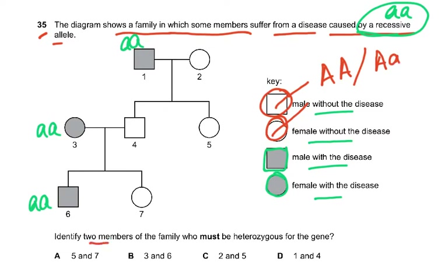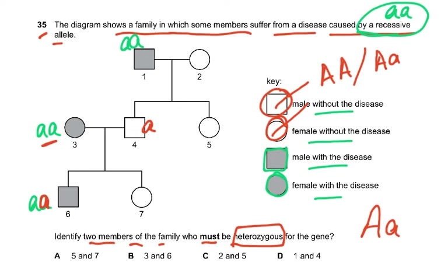The question asks you to identify two members who must be heterozygous (Aa). Persons 3 and 4 are parents of person 6, who has the disease (aa). So one small 'a' must come from person 4 and one from person 3. Since persons 3 and 4 do not have the disease, they cannot be AA — they must be Aa (heterozygous). Person 5, child of persons 1 and 2, must also be Aa because one small 'a' came from parent 1.